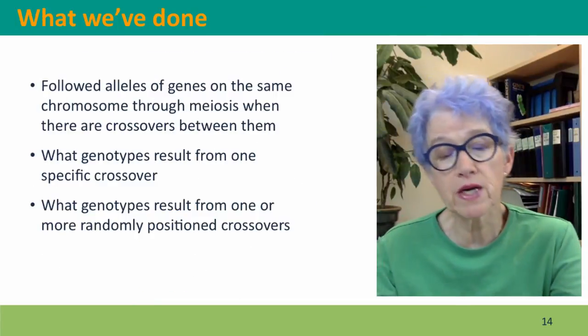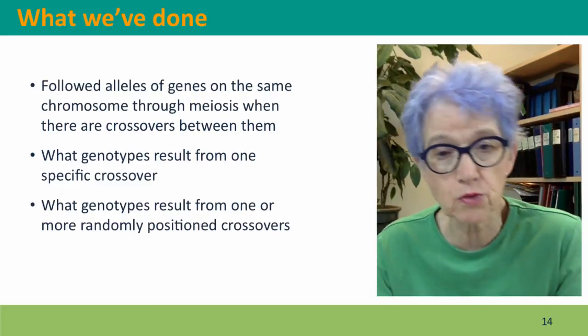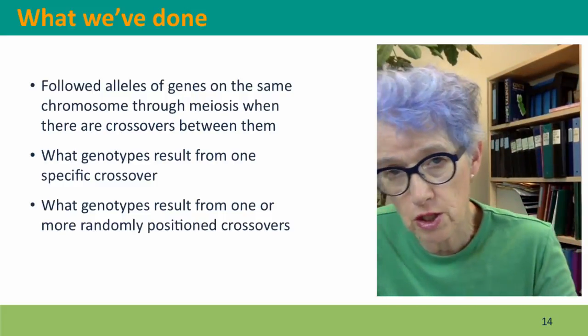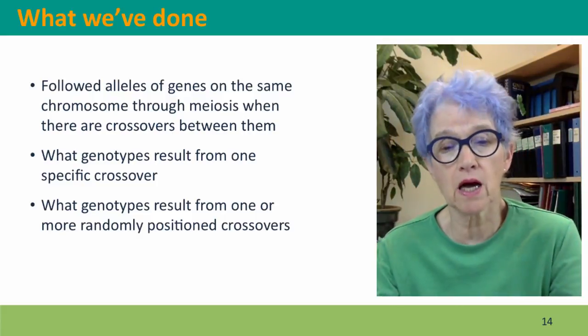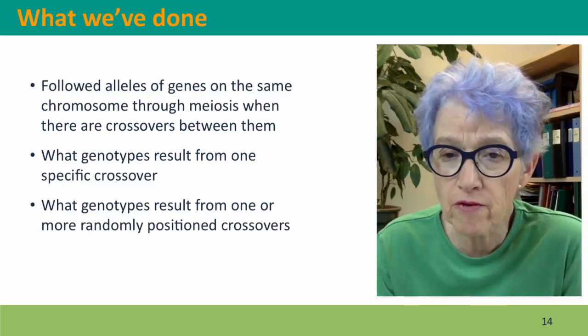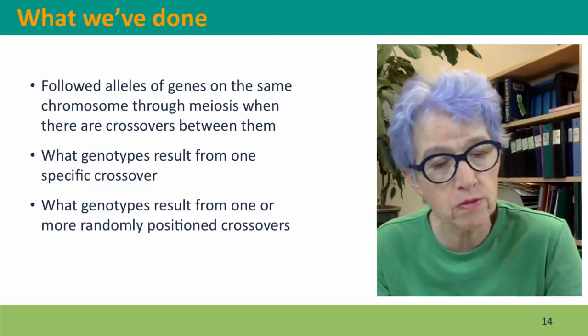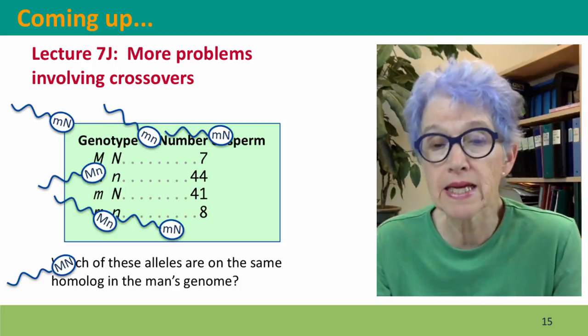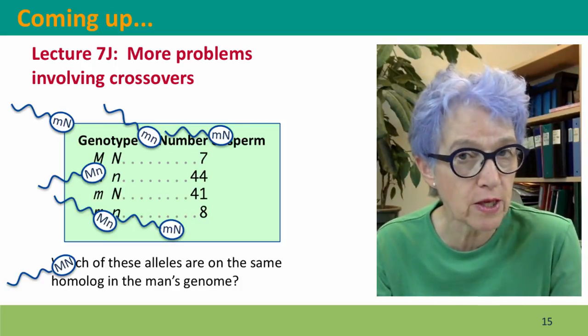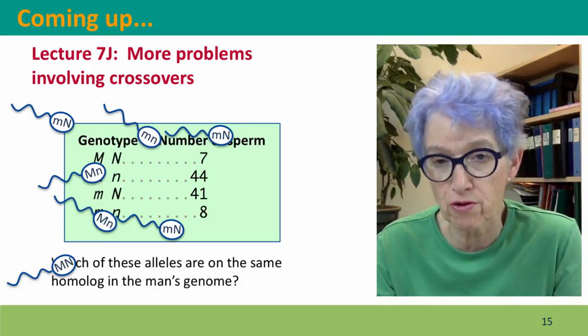So what we've done in this short problem set is we've followed alleles of genes on the same chromosome through meiosis when there are crossovers between them. What genotypes result from one specific crossover. What genotypes result from one or more randomly positioned crossovers. And that's what we're going to do in the next lecture, which is a continuation of more problems involving crossovers. I hope to see you there.